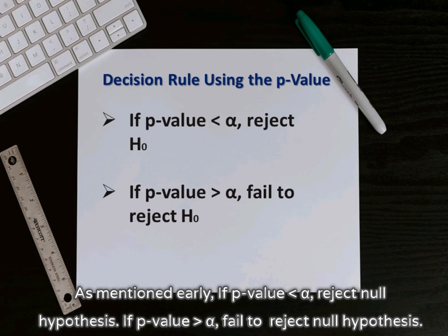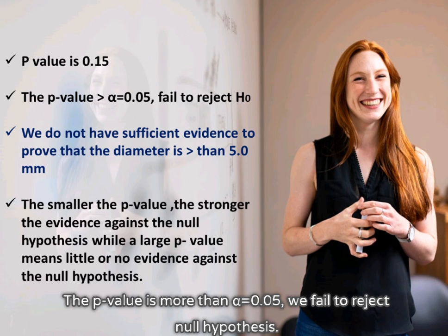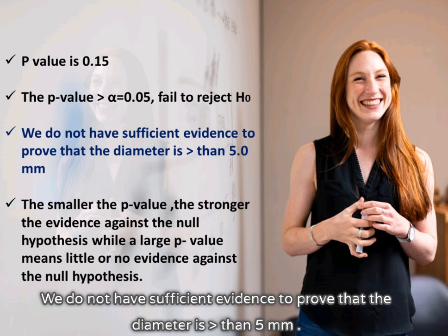As mentioned earlier, if p-value is less than alpha, reject the null hypothesis. If p-value is greater than alpha, fail to reject the null hypothesis. The p-value is 0.15, which is more than alpha equals 0.05. We fail to reject the null hypothesis. We do not have sufficient evidence to prove that the diameter is greater than 5 millimeters.